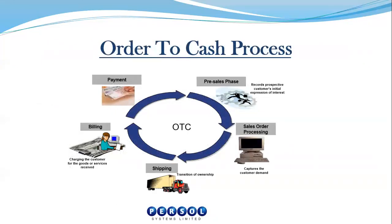In the SAP SD Model, we deal with the order-to-cash process. The process begins with a pre-sales phase, which requires prospective customers' initial expression of interest. Moving on to the sales order processing phase, which captures the actual demand of the customer. Then we have the shipping and transportation phase, which deals with the transition of ownership from the selling company to the customer. And then we move on to the billing stage, where we bill the customer for the goods that have been delivered, and then the customer pays based on that billing document.